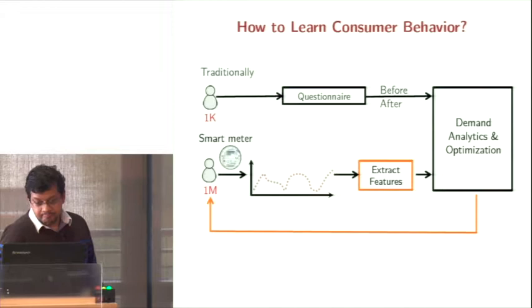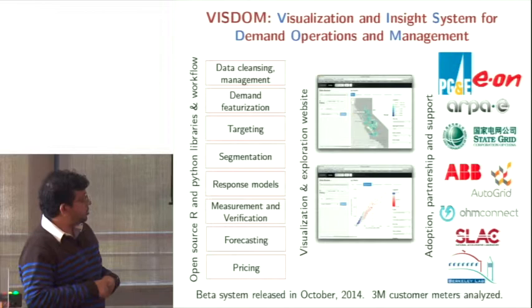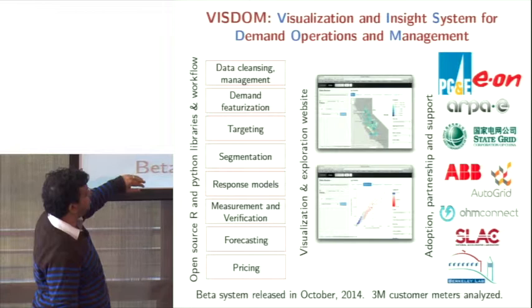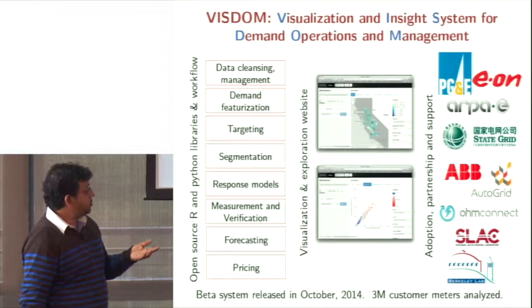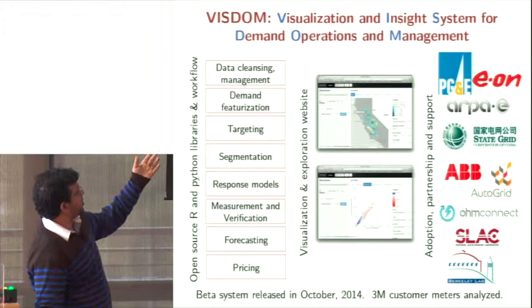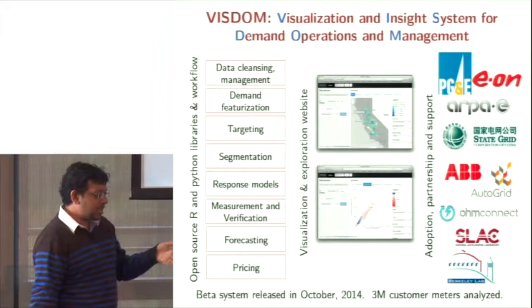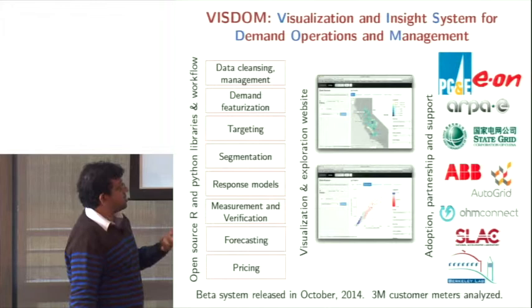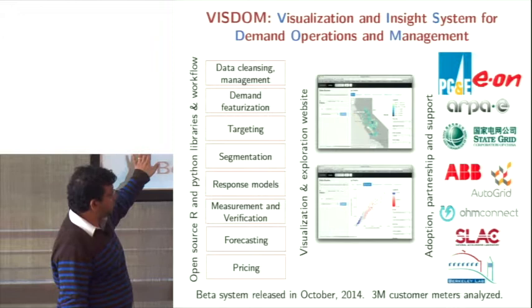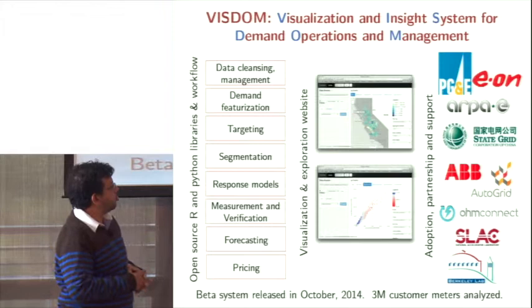We got sponsored by the Tomcat Center, the Precourt Institute, and ARPA-E, and we built a set of open-source tools. We have libraries in R and Python that enable you to take smart meter data and process it for millions of users. The last count in February had more than 3 million meters analyzed. You can extract features, target, do segmentation, build response models that try to predict how much savings a specific user will have — based on whether you were doing a randomized control trial or using baselining and forecasting approaches.